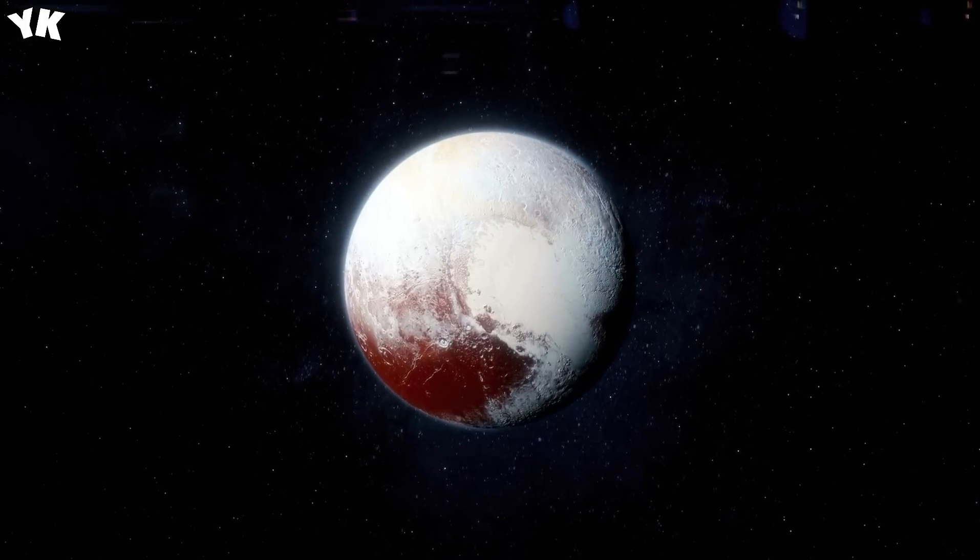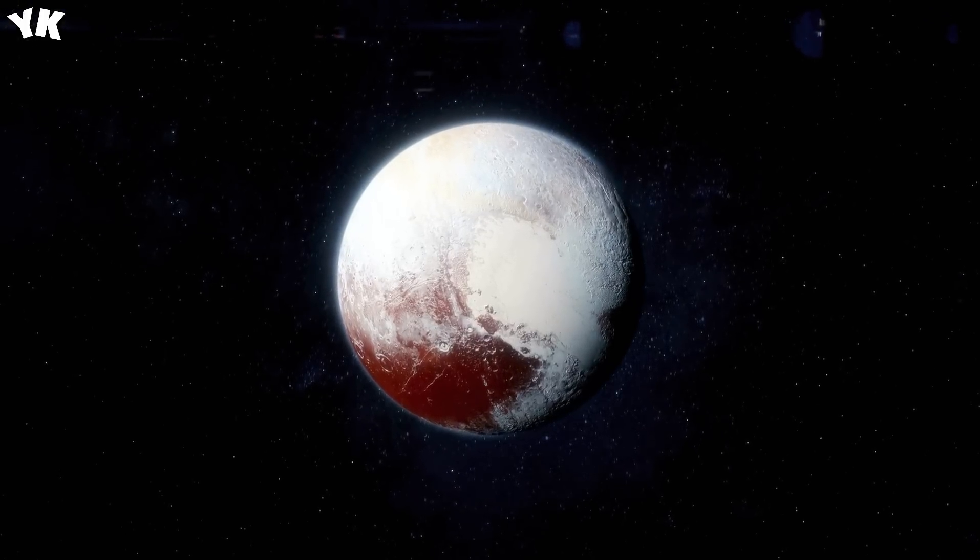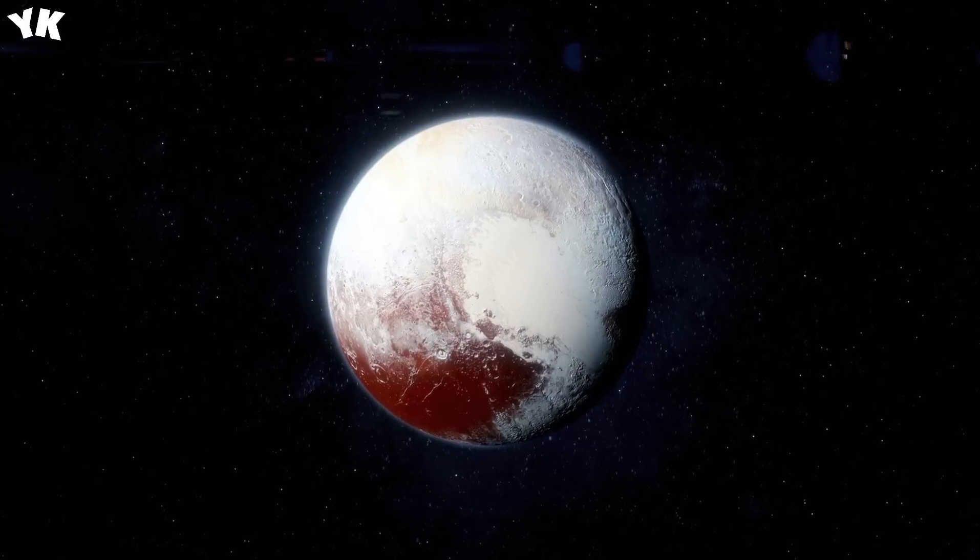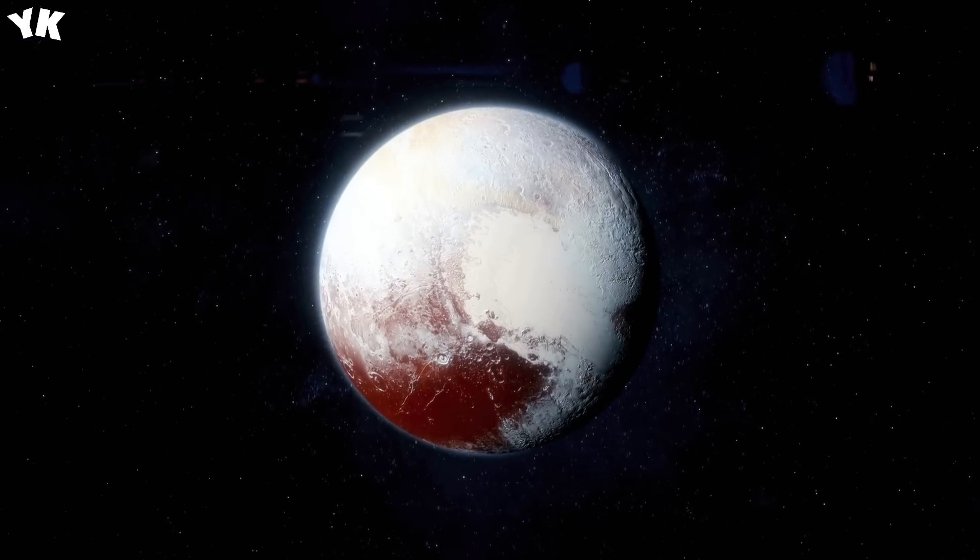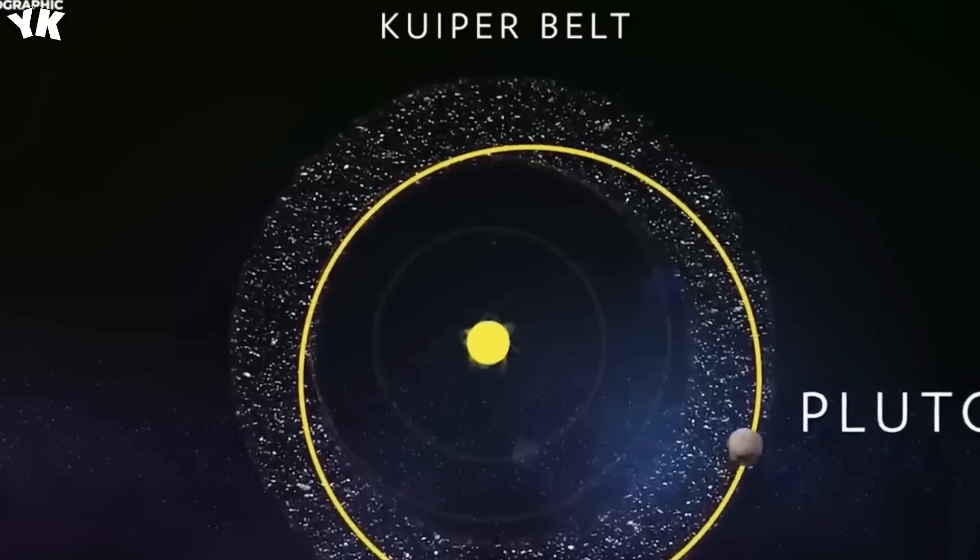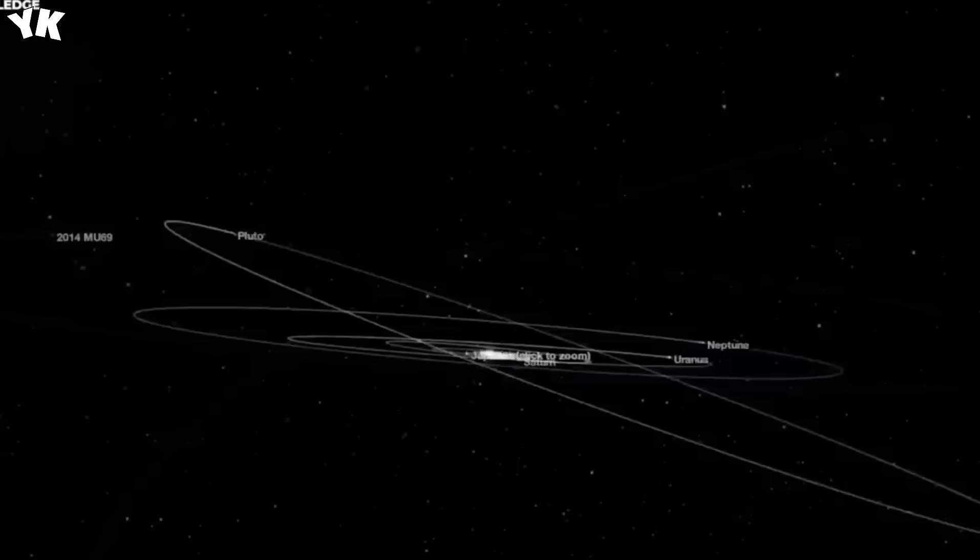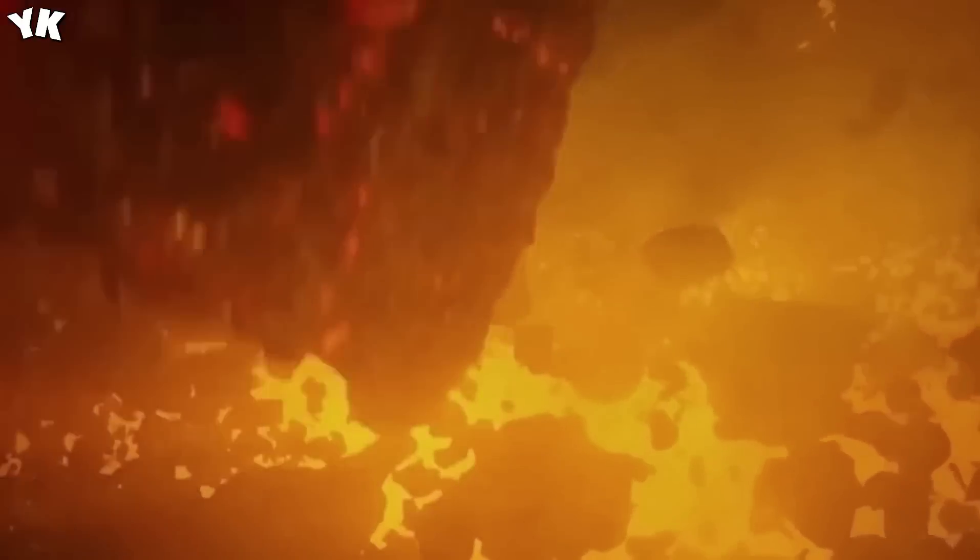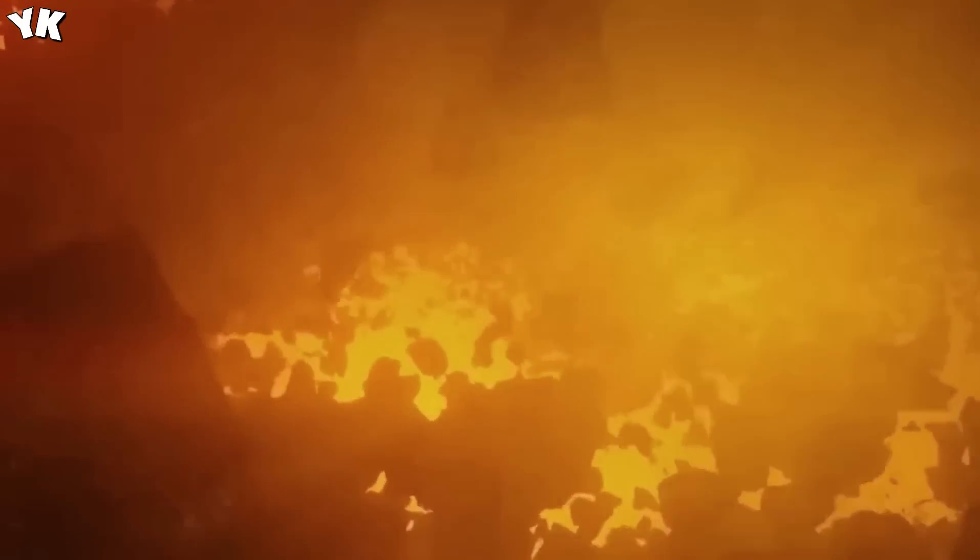Recent computer tests have enhanced our understanding of how large planets like Neptune, Jupiter, and Saturn influence Pluto's path around the Sun. Neptune's unique relationship with Pluto, completing three orbits for every two of Pluto, significantly contributes to the stability of Pluto's orbit.